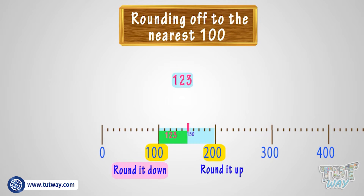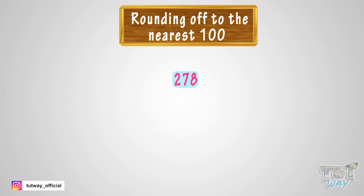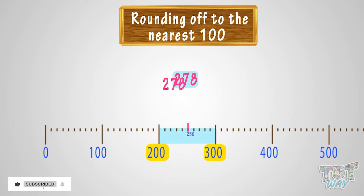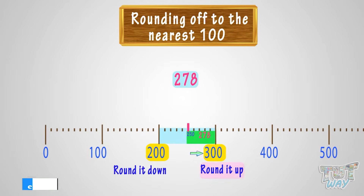Now let's take another example, 278. We have to round 278 to the nearest 100. Let's see where we can fit 278 on this number line. It is somewhere between 200 and 300. 278 is after the 50 mark, so we will round it up to 300.